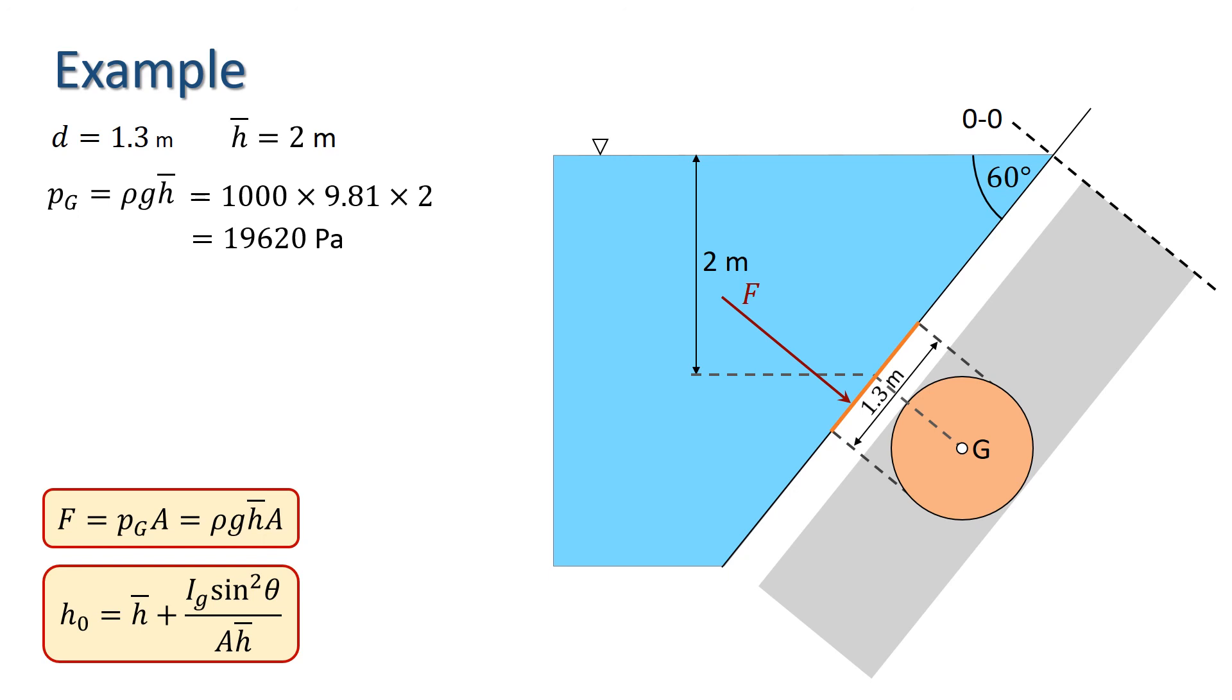The area in question is a circle, so we have an area of pi times d squared over 4, where d is the diameter of the circle, which gives us 1.327 metres squared. This gives us a force of 26,042 newtons, or 26 kilonewtons.